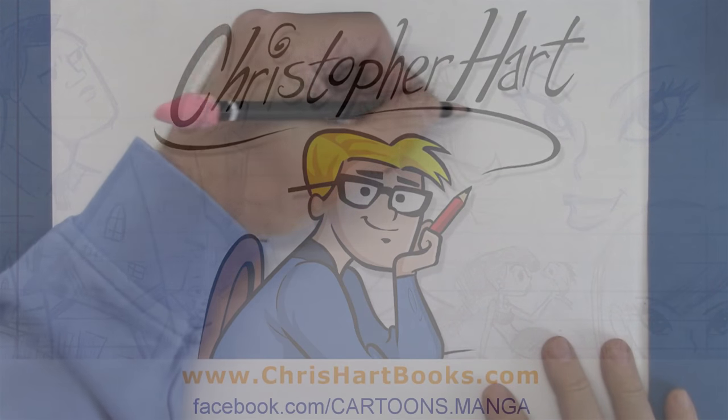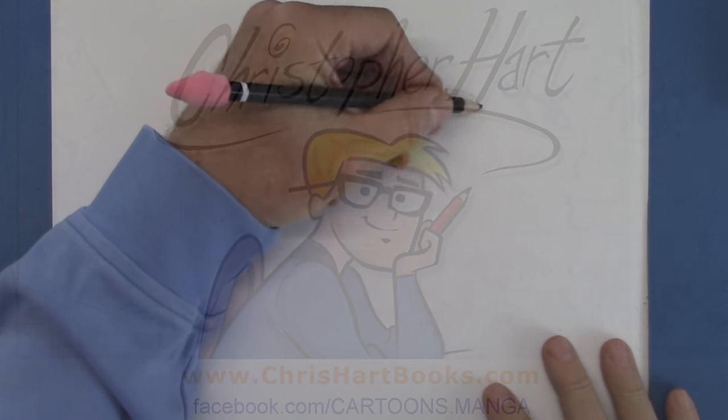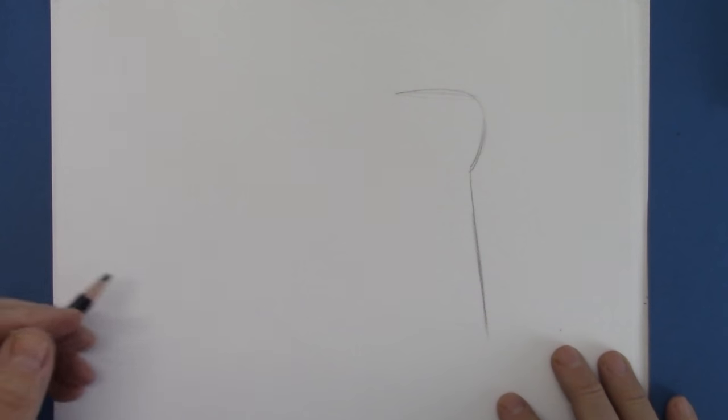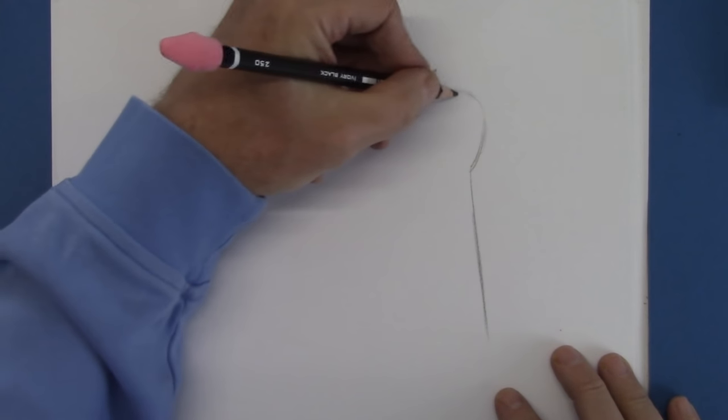To do that I'm going to use a dog character. I'm going to show you how to draw a basset hound, which is one of my favorite types of dogs. I'm going to show you how to do this with exaggeration.